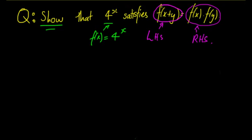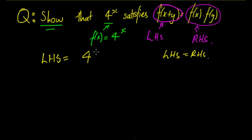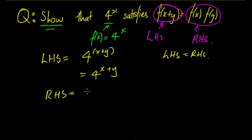We want to prove that the left-hand side equals the right-hand side. The left-hand side is f(x+y), which equals 4^(x+y), because x is replaced with (x+y). The right-hand side is f(x)·f(y) = 4^x · 4^y.